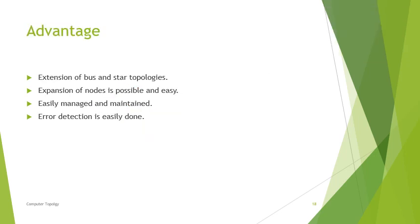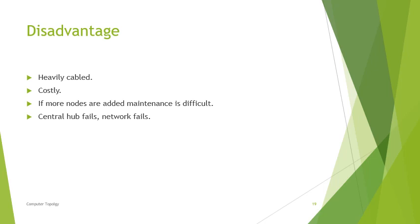Advantages of tree topology: it is an extension of bus or star topology, expansion of nodes is easy, the network can be easily managed and maintained, and fault or error detection is easy. Disadvantages: heavy cabling is required, it is costly, maintenance becomes more difficult as more nodes are added, and if the central hub fails, the entire network fails.